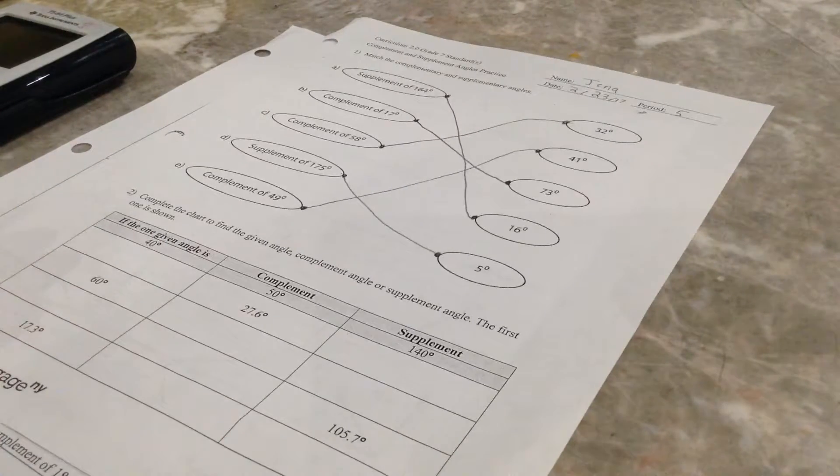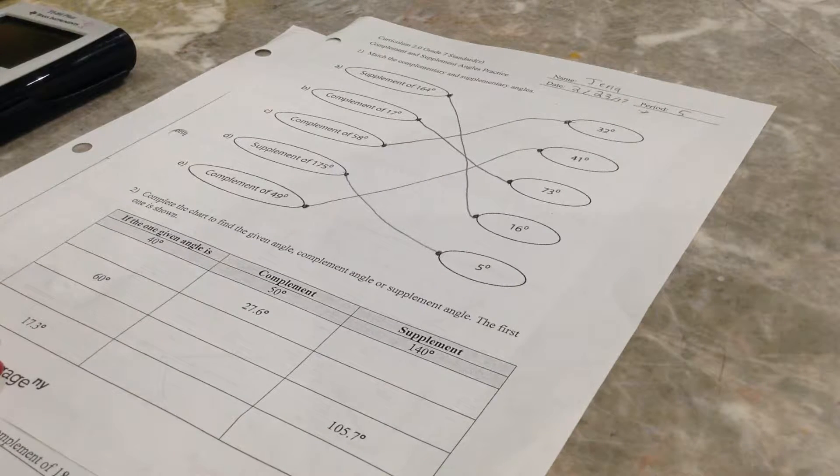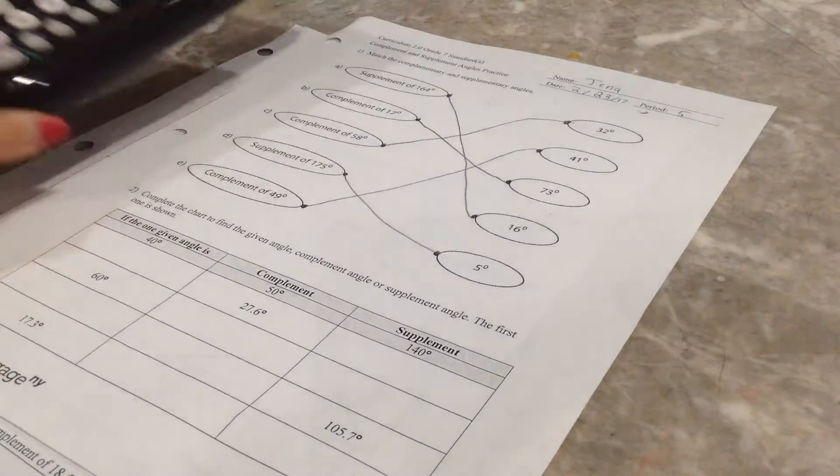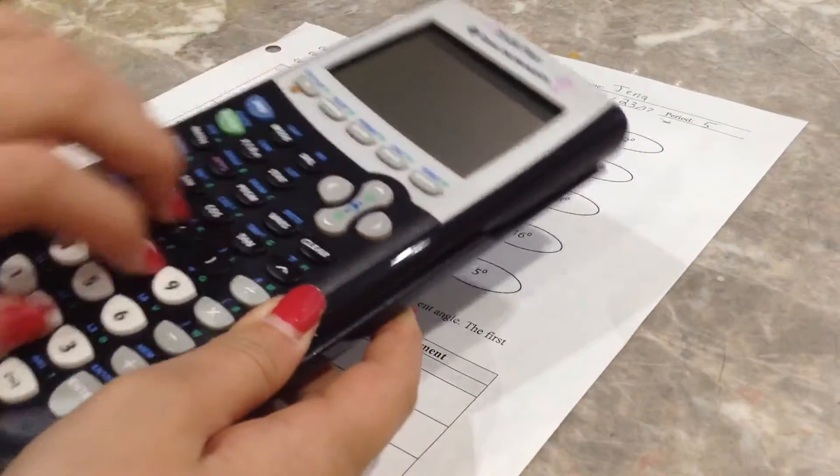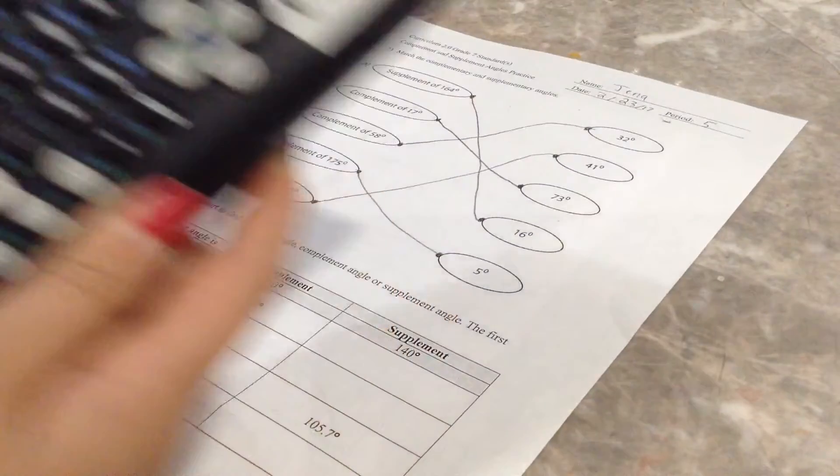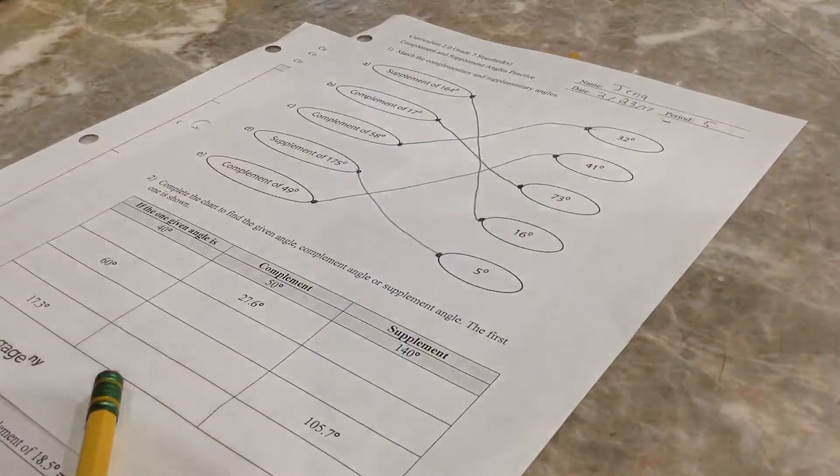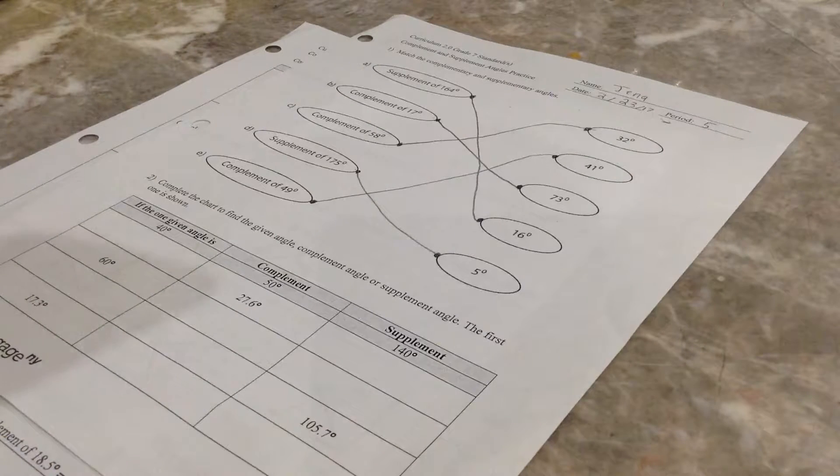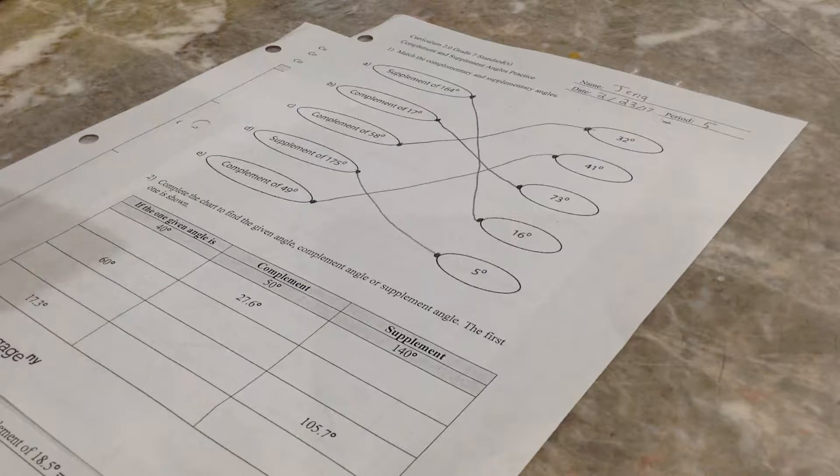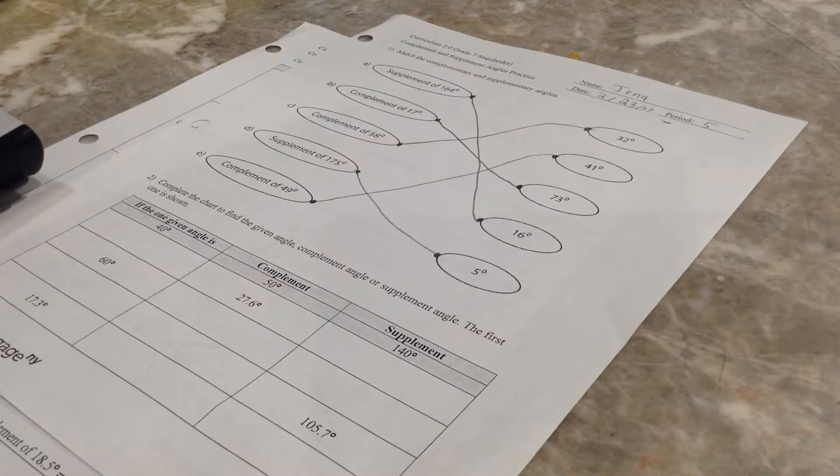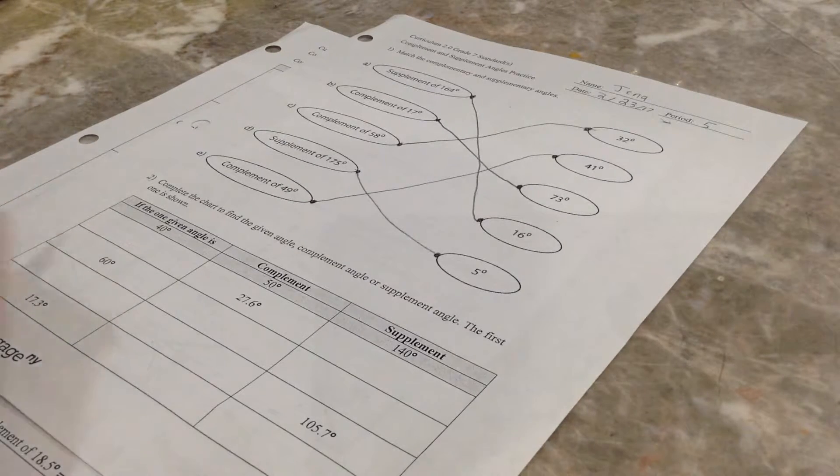Okay. If the one given angle is 45, 27.6. So, now we can use our handy-dandy calculator. So, this is a calculator unit, thank goodness. But, let's start. Let's see. 90, right. 90, subtracted by 27.6 equals 62.4, right?